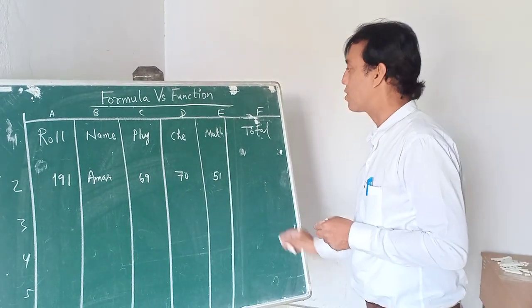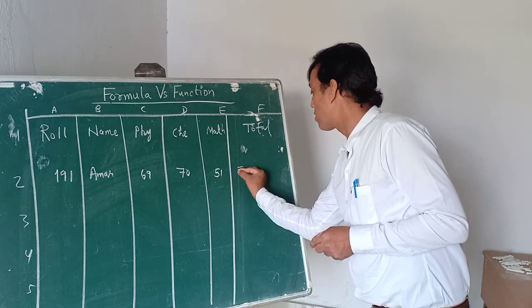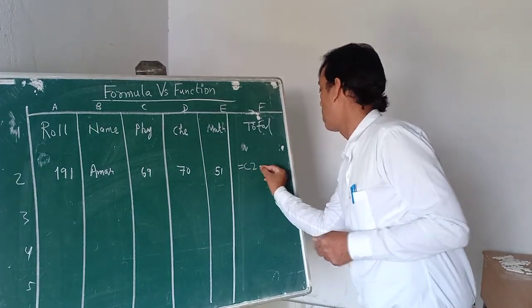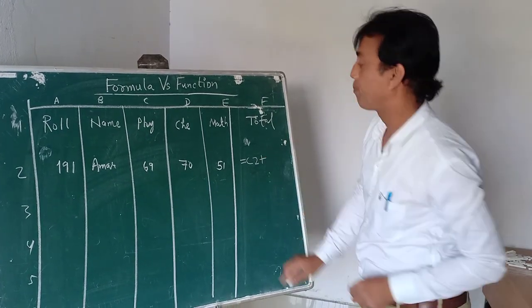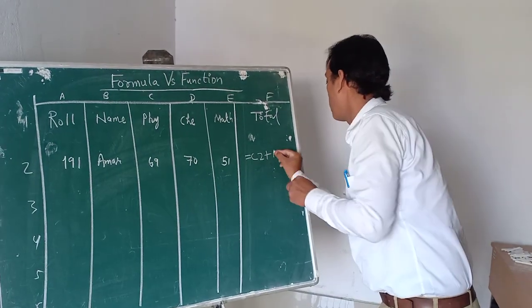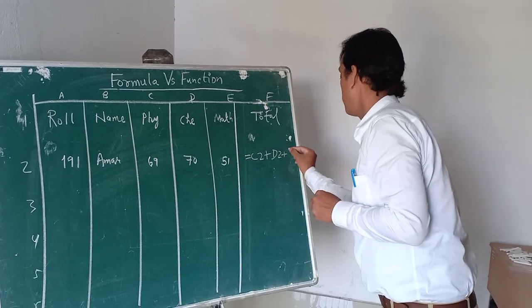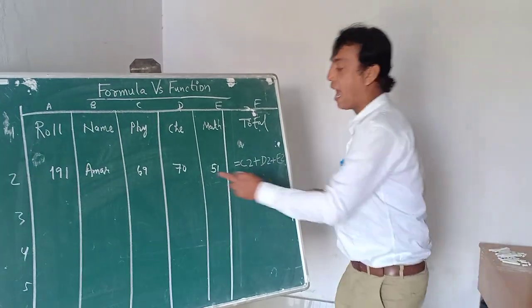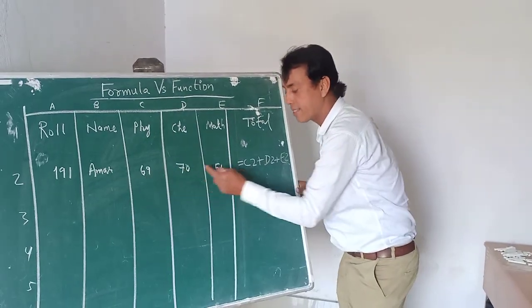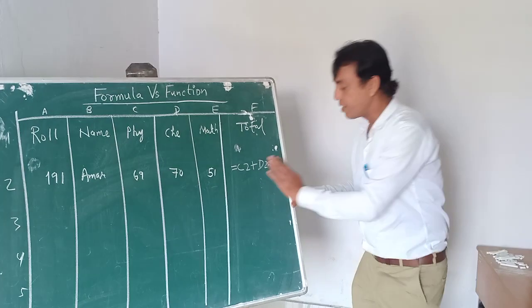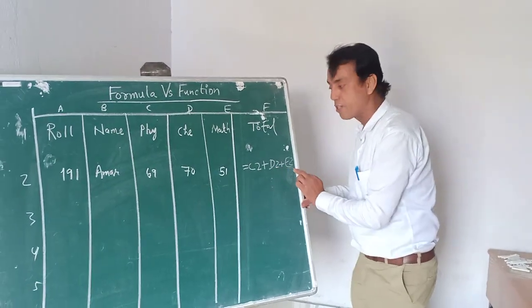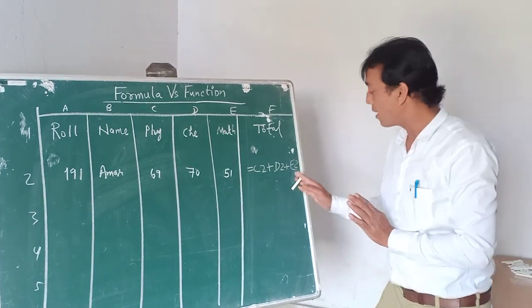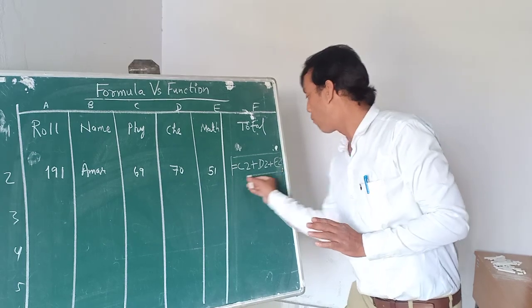Instead of manual calculation, if we put equals to C2 plus D2 plus E2, then Excel will add these numbers and put the result. The addition of these three marks will be displayed. This is done through formula.